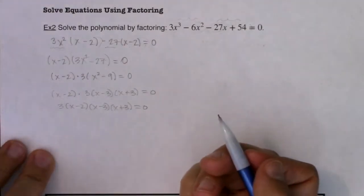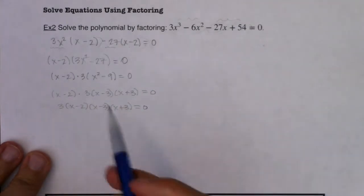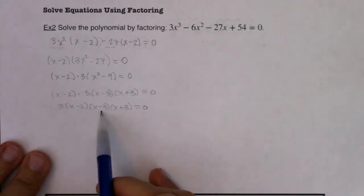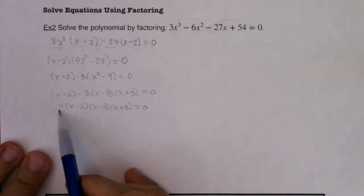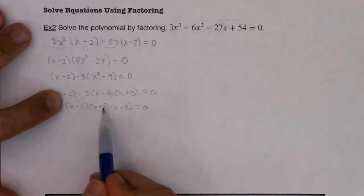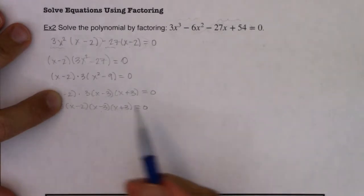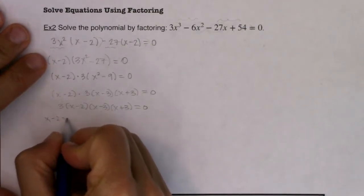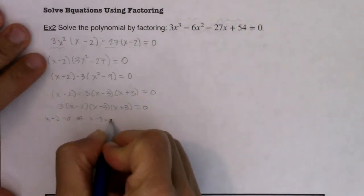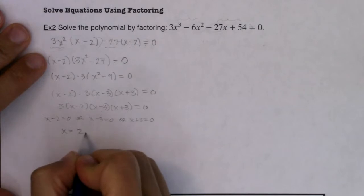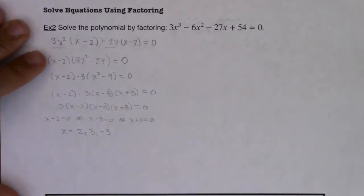So at that point if I want to solve it again I'm going to use the zero product property. So either 3 is equal to zero or x minus 2 is equal to zero or x minus 3 or x plus 3. Now 3 is never equal to zero that's a constant so I don't have to worry about a solution coming from the 3. But these other three linear factors they do give me possible solutions. So I have either x minus 2 equals zero or x minus 3 is equal to zero or x plus 3 is equal to zero. So if I solve for x I'm going to get 2, 3, or negative 3. Those are my three solutions for this problem.